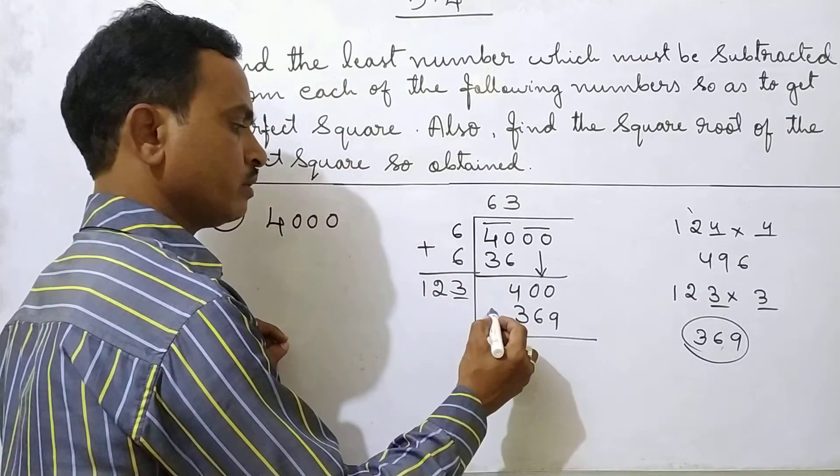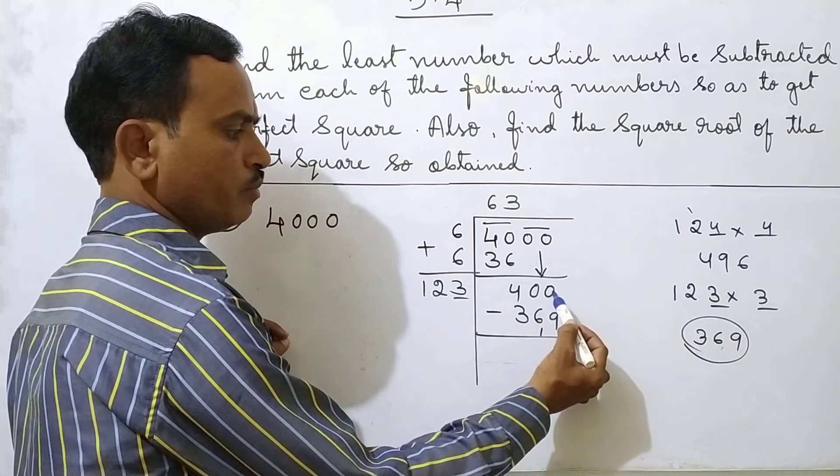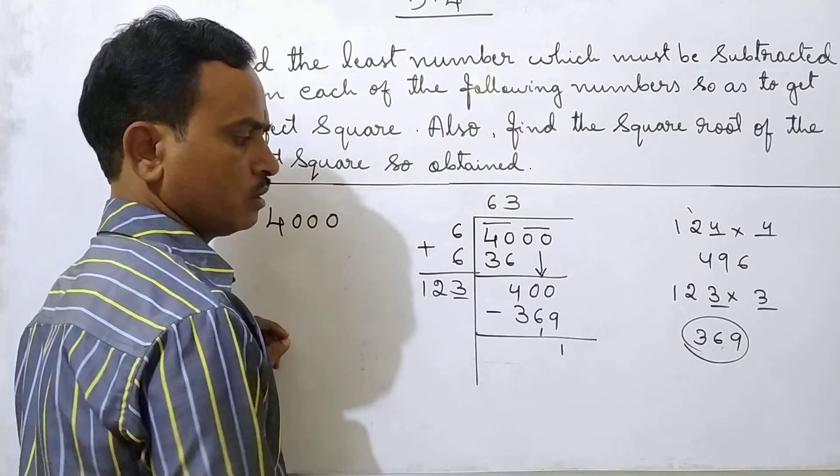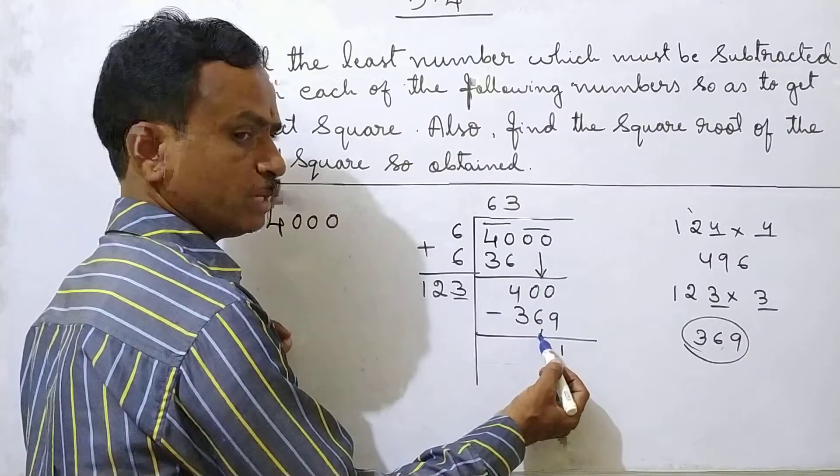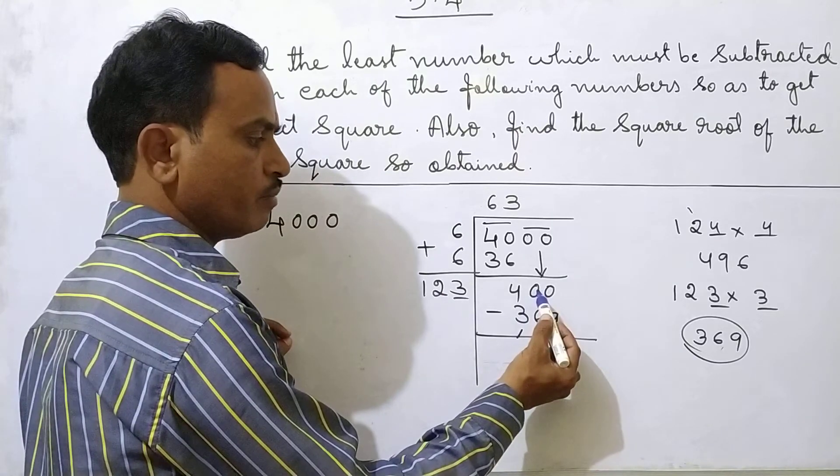Now subtract. 0 is there here. Carry 1. Then it become 10. 10 minus 9, 1. Now again here 0. 6 plus 1 you should take 7. Keep 1 here. Keep 1 here. Then it become 10.